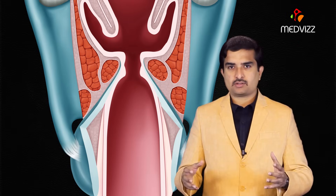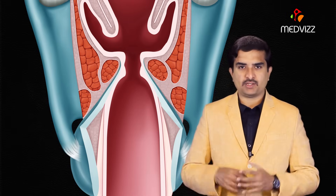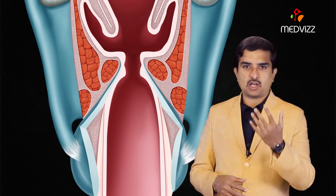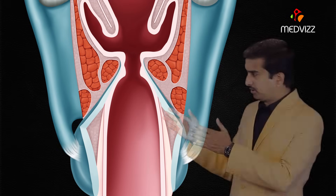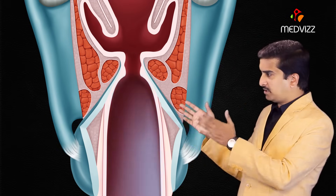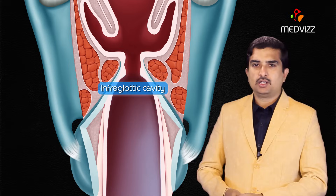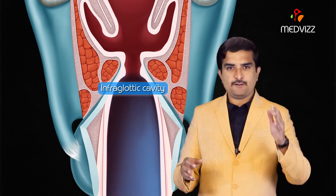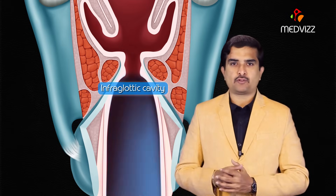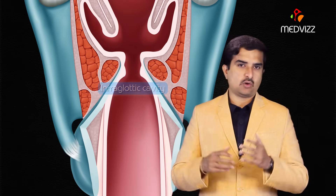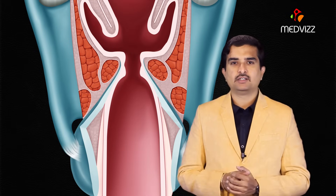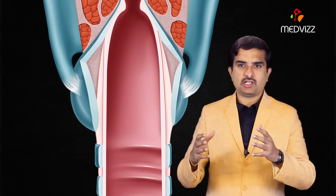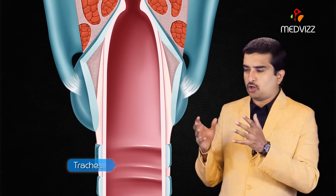Vibrations of the adducted vocal ligaments with expiration produces sound. The third region is the infraglottic cavity — the portion of the larynx inferior to the vocal folds — which communicates distally with the lumen of the trachea.